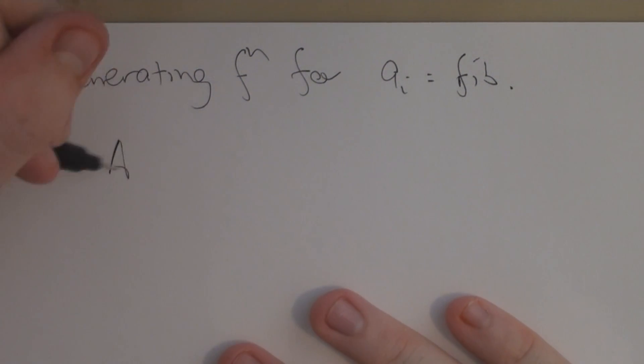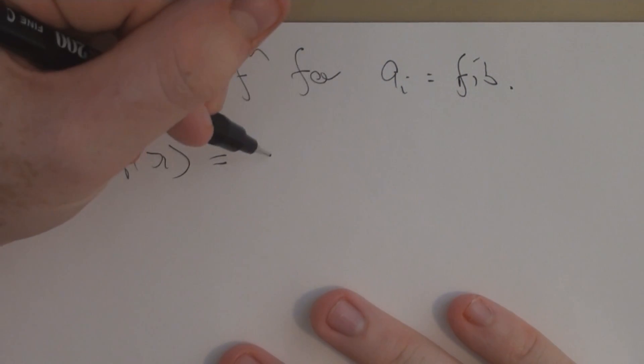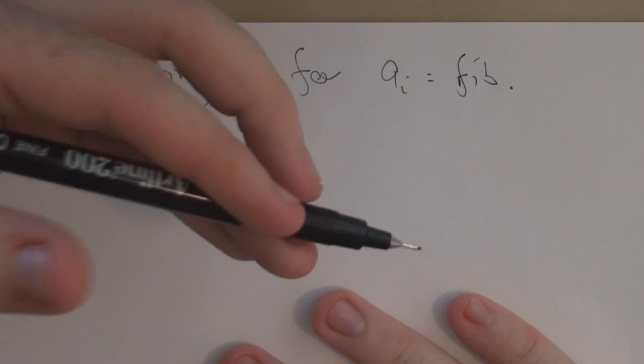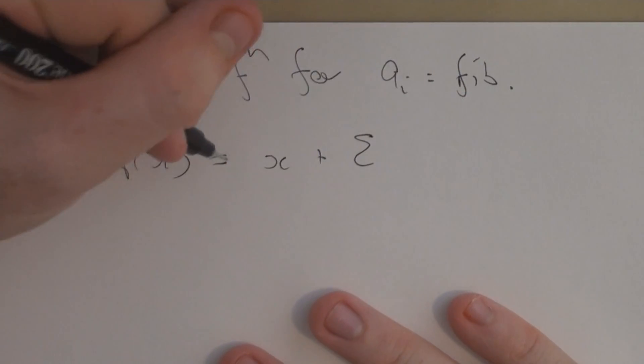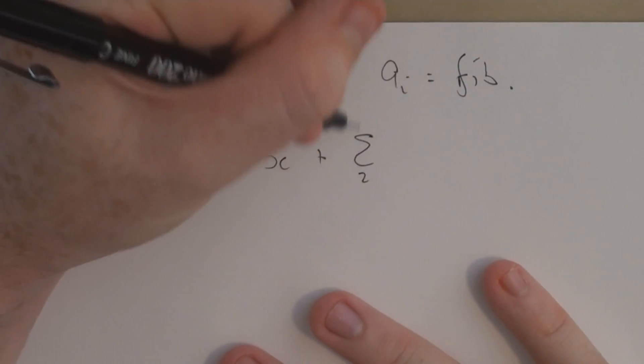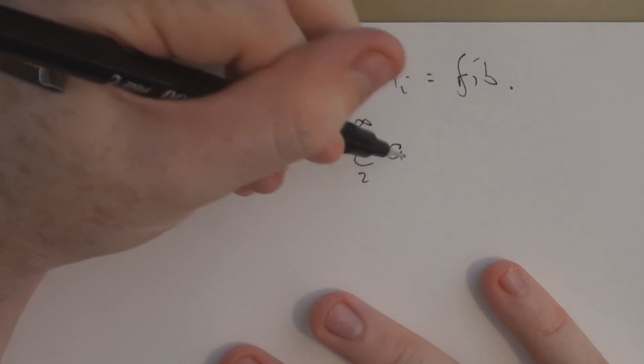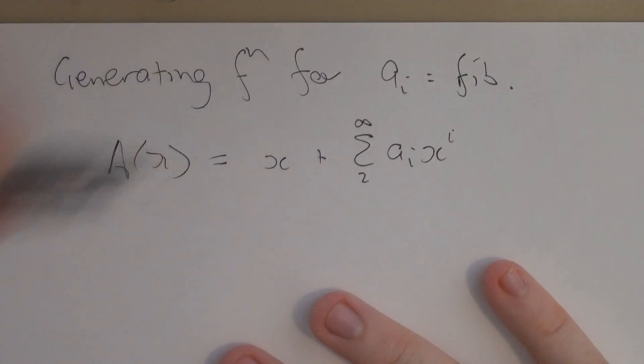Well, what do we have? Well, so A of x then, is, well, it starts with 0, so a_0 is 0, and then 1 times x, and then, you know, 1 times x squared, you know, it goes on and on and it looks like the sum. So here's 0 and then 1. It's the sum from 2 to infinity of a_i x to the i.